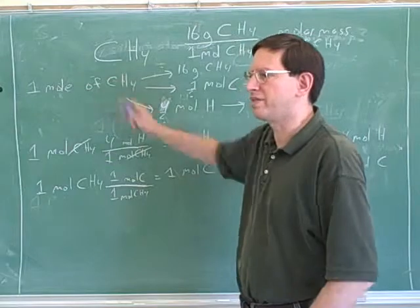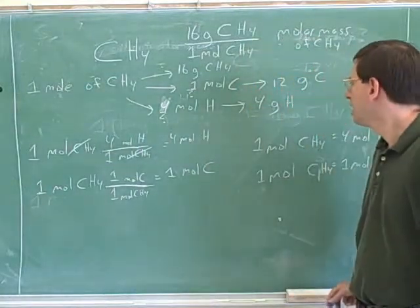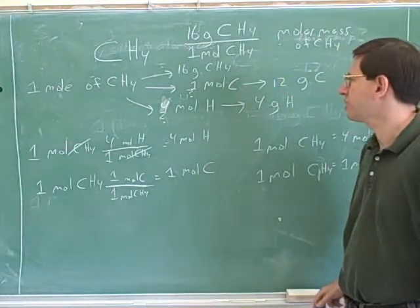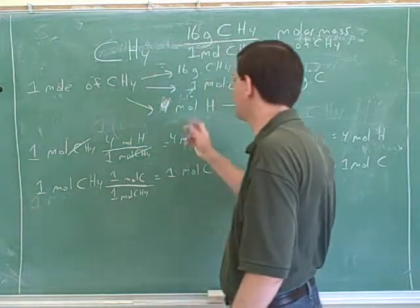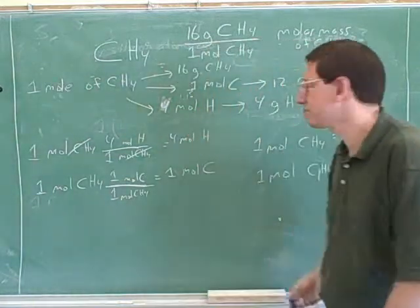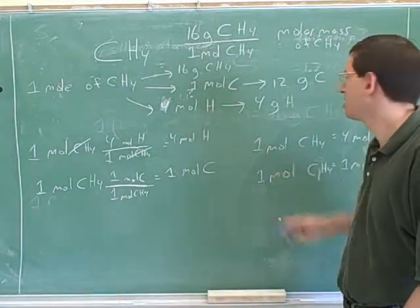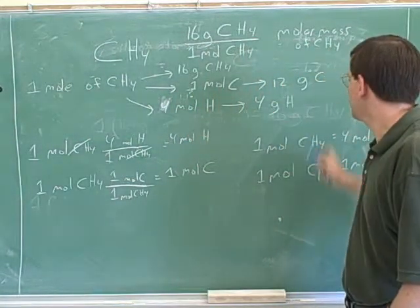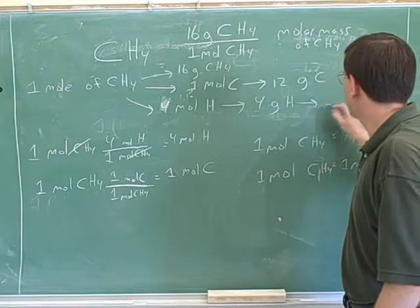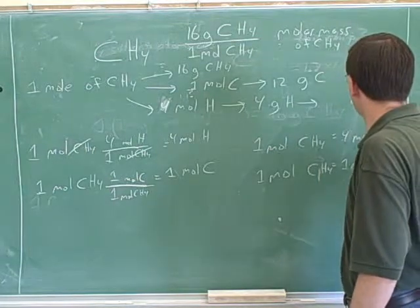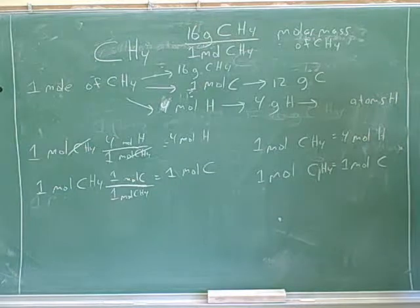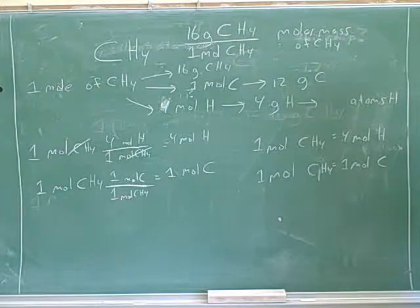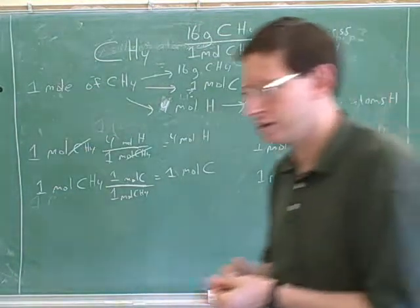Let's look at our one mole of methane. We saw that one mole of methane was the same as four moles of hydrogen, and that's the same as four grams of hydrogen. Let's figure out how many atoms of hydrogen that is — that's something we probably have to work out on paper.